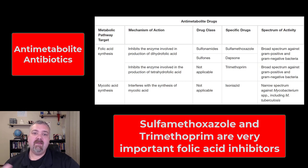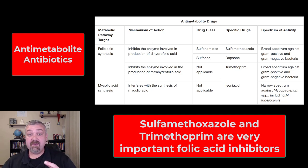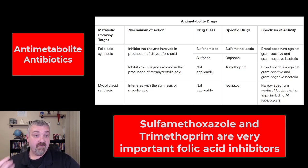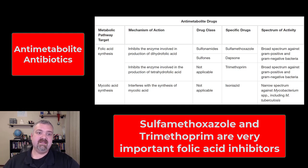Hey everybody, Dr. O here. I'm going to do a couple of videos where I talk about anti-metabolite drugs. An anti-metabolite is something that's going to be a competitive inhibitor of an enzyme that a microbe would use to do something. In this video we're going to talk about the sulfonamide drugs like sulfamethoxazole, and we'll also cover trimethoprim. Isoniazid, which is an anti-mycobacterial drug, will be covered in a separate video.